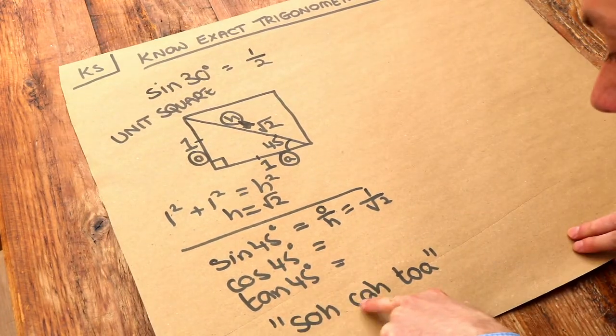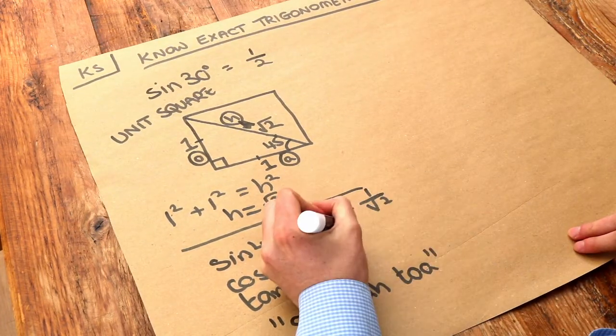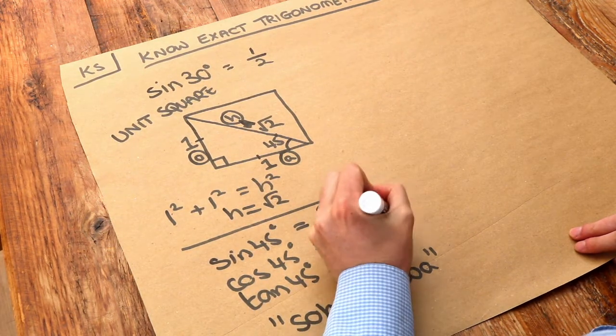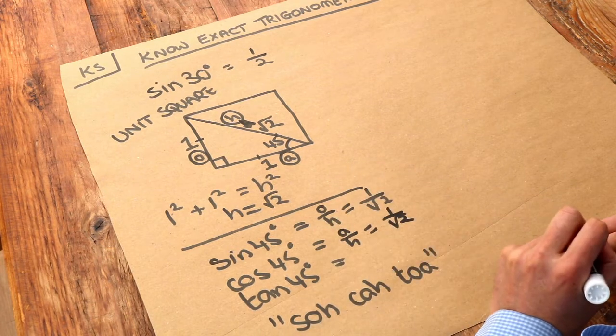Cos of 45, cos is adjacent over hypotenuse, so A over H, so 1 over root 2. So cos of 45 is 1 over root 2 again.